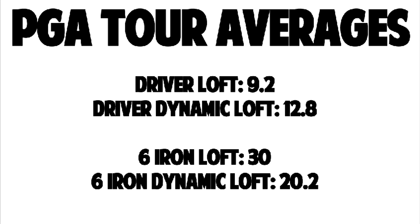The average PGA Tour dynamic loft with the driver at contact is 12.8 degrees — don't let that fool you into thinking they're flipping past their hands. It's simply the actual loft on the face where they're contacting the ball, which is usually above the sweet spot. For example, my eight-degree driver actually measures 9.8 degrees with precise equipment. If I hit slightly above center on a radar, it reads 11 or 12 degrees of dynamic loft — that's the actual loft at contact.